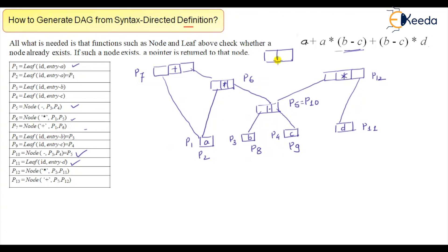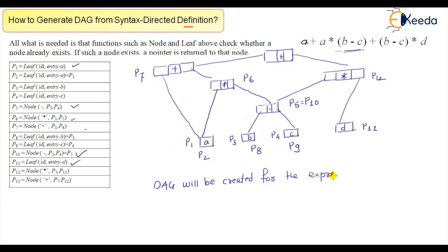Finally, we have a node that is plus, and it will point to p7 and p12. This is how the DAG will be created for the expression. The same concept — that if a pointer value is already evaluated we reuse it — can be written as a translation rule, which is nothing but SDD: syntax directed definition.